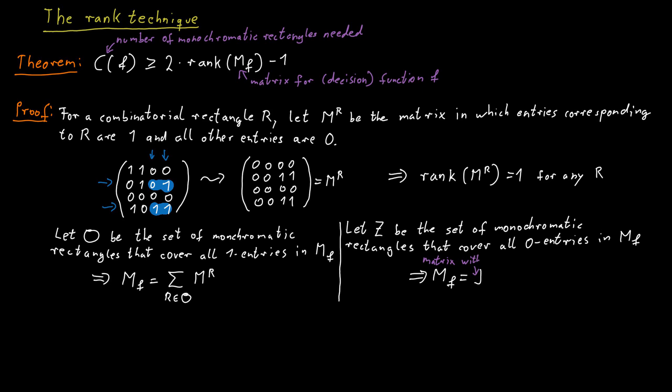So we start with a matrix that is all ones. Let's call this matrix J. And now we say that MF is equal to this matrix that contains ones everywhere, J, minus all the combinatorial rectangles that cover the zero entries. So we subtract the sum of all MR where R is out of Z.